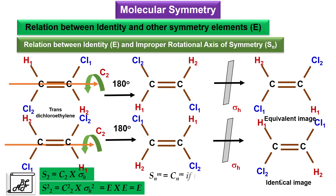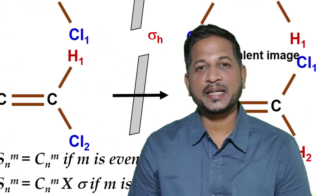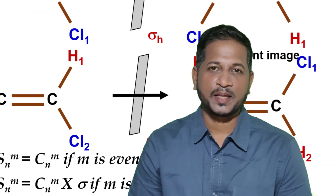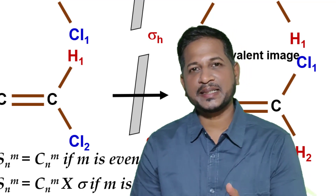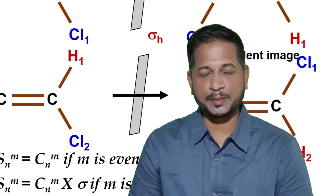In general, we can write that SN raised to M equals CN raised to M when M is even, and SN raised to M equals CN raised to M times sigma when M is odd. This is the relation between the identity element and the improper axis of symmetry. I hope you understood what the identity element is and its relation with all other symmetry elements.